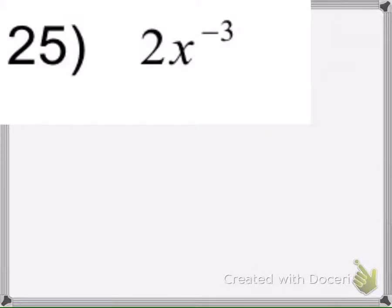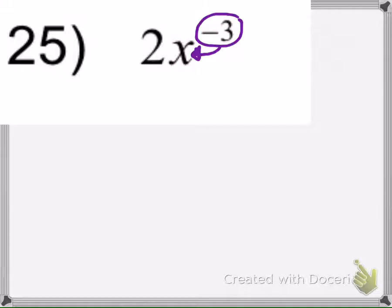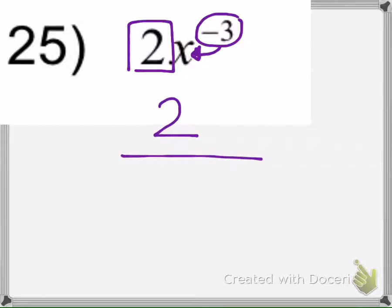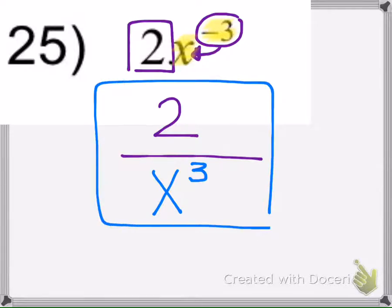Next example. Remember that the exponent only applies to what's next to it. So the 2 here is a coefficient, and it does not have a negative exponent — it's going to stay. But the x has a negative exponent, and it moves to the denominator. That would be our final answer: 2 over x cubed.